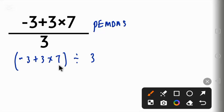3 times 7 will give us 21. So we have minus 3 plus 21 in parentheses, divide by 3. Now minus 3 plus 21 will give us 18.